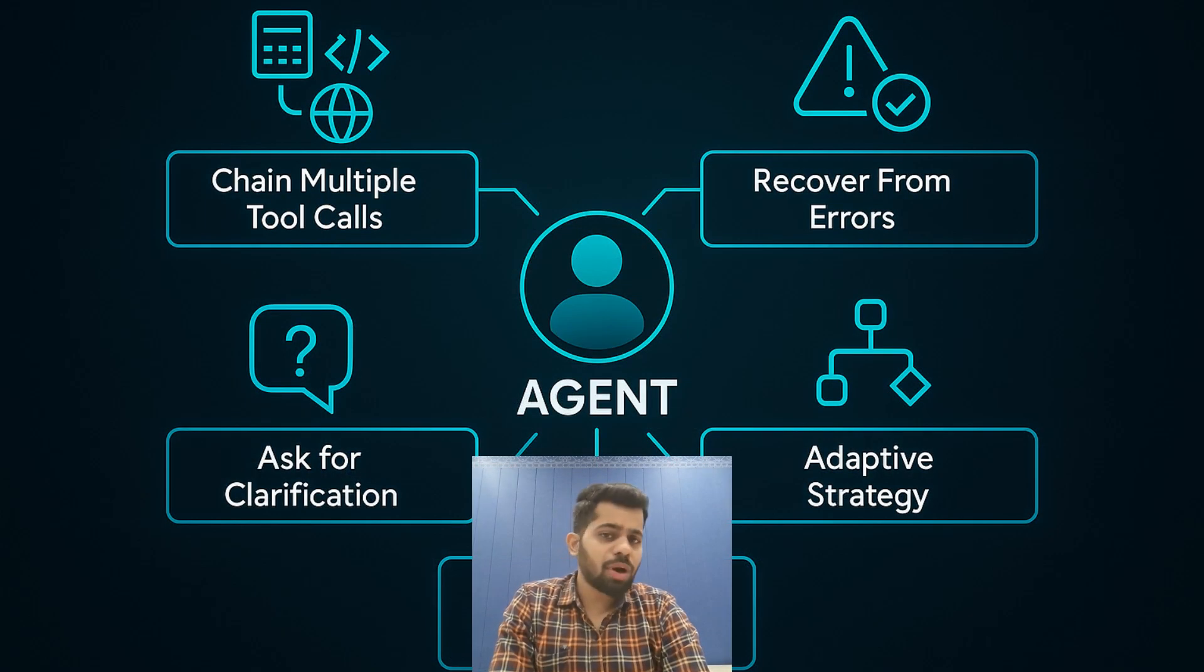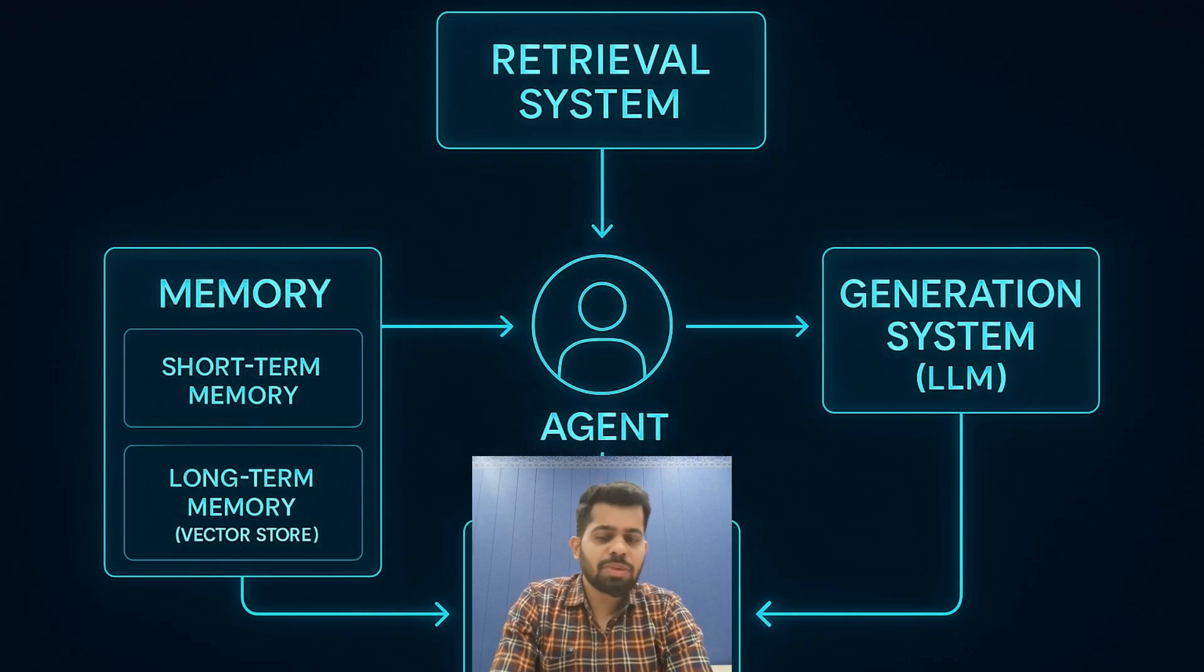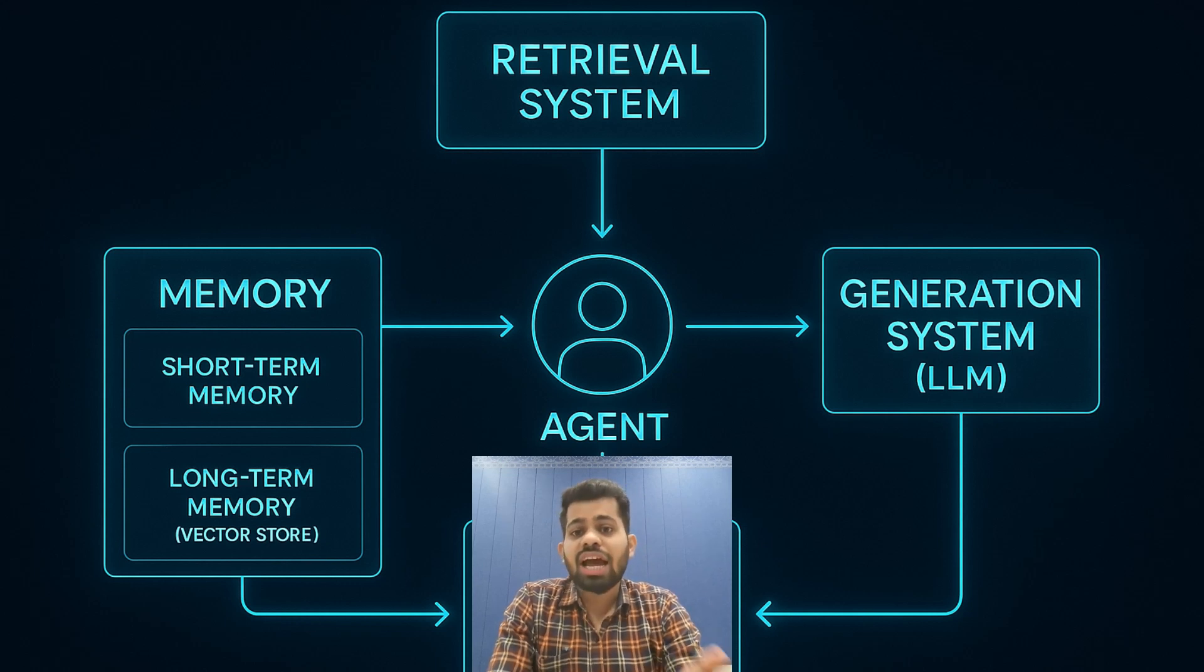What makes agents powerful? They can chain multiple tool calls together. They can recover from errors. They can ask for clarification. They adapt their strategy based on results. Memory is essential for maintaining conversational history and context across multiple turns. The agent uses memory to inform its decisions and direct the flow of information between the retrieval system and the generation system.